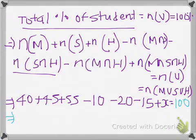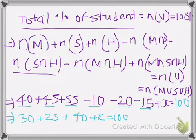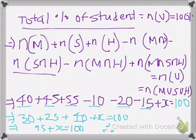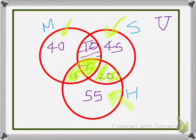When we solve this: 40 minus 10 is 30, 45 minus 20 is 25, plus 55 minus 15 is 40, plus X should give 100. Adding these up: 30 plus 25 plus 40 gives 95, so 95 plus X equals 100. Therefore, our intersection of all three sets — M intersection S intersection H — X is equal to 5%. So 5% of students passed in all three subjects.